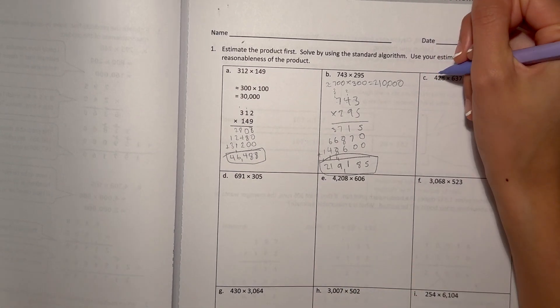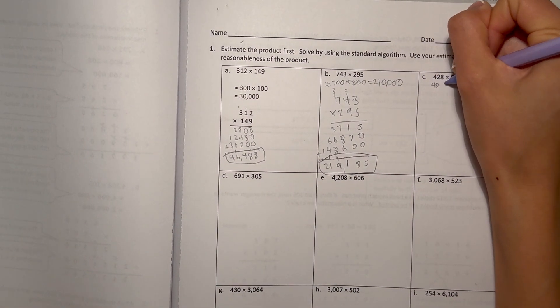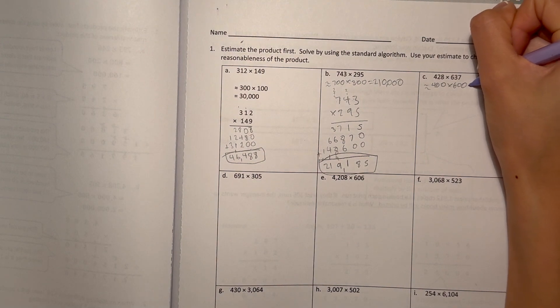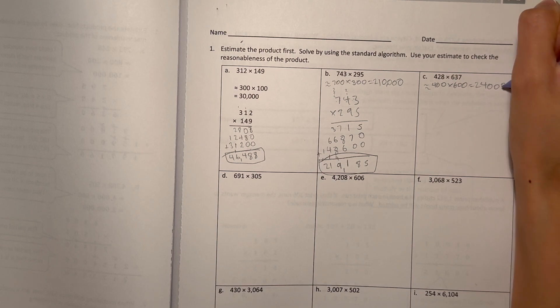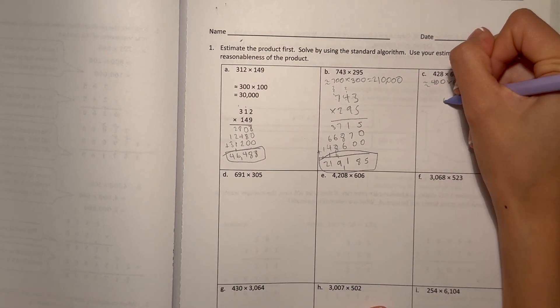Now let's look at C. 428 round to the nearest 10, that's 400, times 637 would be 600. And that would be 4 times 6 is 24. And now let's add the zeros. So 240,000 is our estimate. Now let's do the actual math.